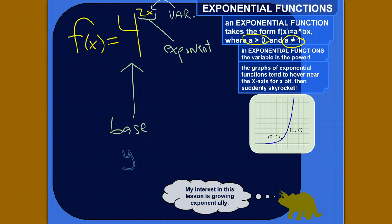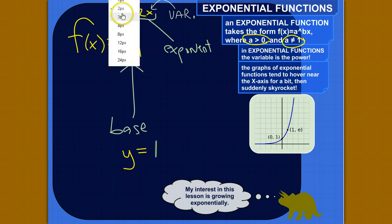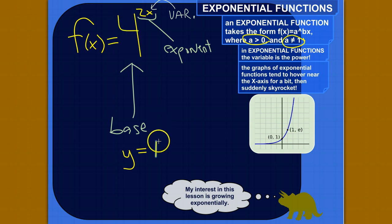Because what would happen if the base were 1 would be something like this. Say we had y is equal to 1 to the power of x. Well, no matter what you plug in for x, this would still equal 1. 1 squared equals 1. 1 to the 5th equals 1. 1 to the negative 5th is equal to 1 over 1 to the 5th, and 1 to the 5th is 1. So that equals 1 over 1, which equals 1.